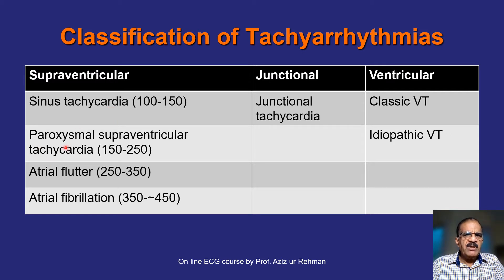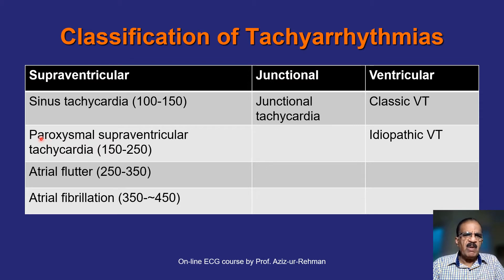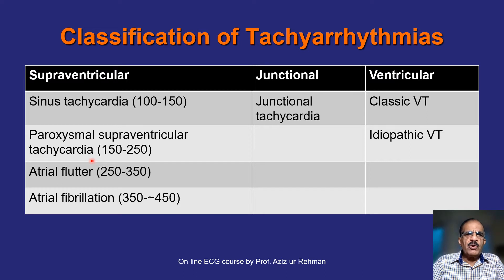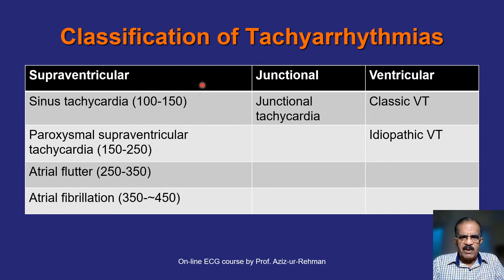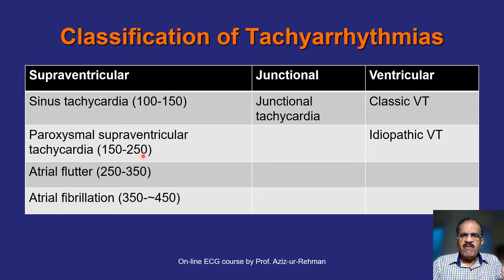There is a condition called paroxysmal supraventricular tachycardia. It is called paroxysmal because it comes in attacks — the patient may be absolutely fine and suddenly, sometimes due to a triggering factor and sometimes without any known cause, develops severe tachycardia in the range of around 150 to 250 beats per minute. The figure of 150 is critical: in sinus tachycardia, the resting heart rate usually does not exceed 150, so a rate above 150 and below 250 may indicate paroxysmal SVT.